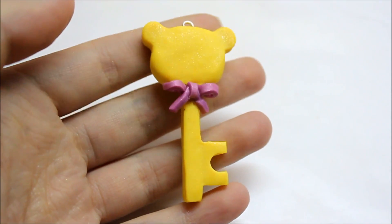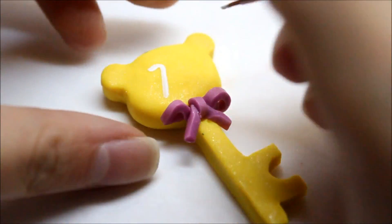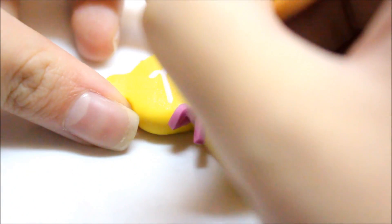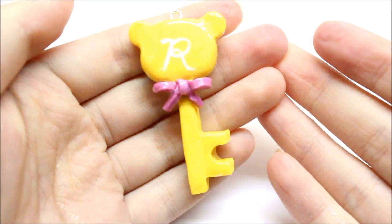After it's baked, it should look like this, and now we're just going to paint on the R. After glazing, this is what your charm should look like, and that's pretty much it.